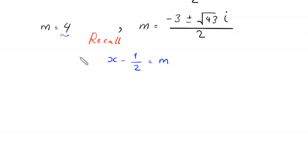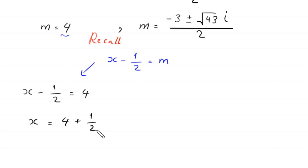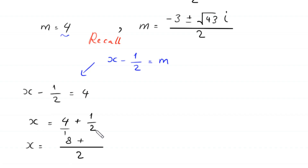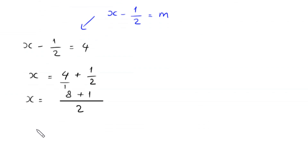When m equals 4, the equation x minus 1/2 equals 4 gives x equals 4 plus 1/2. Taking the LCM of 1 and 2, we get x equals (8 plus 1) over 2, which equals 9 over 2. This is the first value of x, and the first solution to the equation.